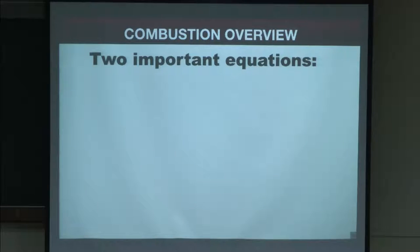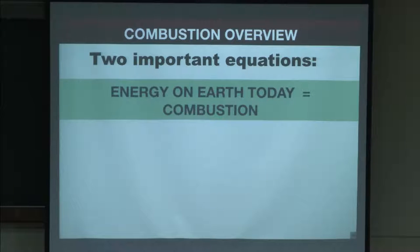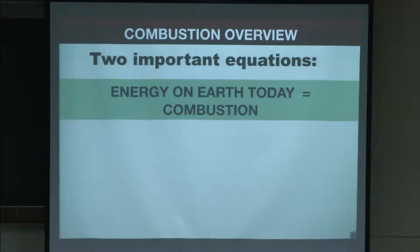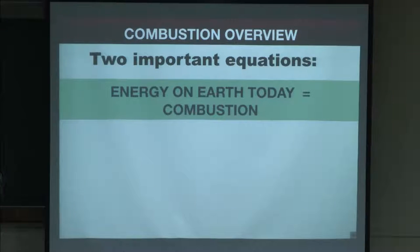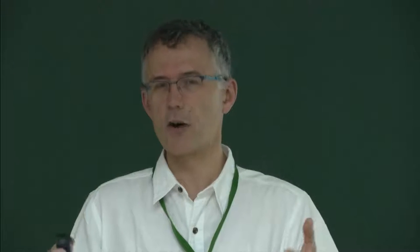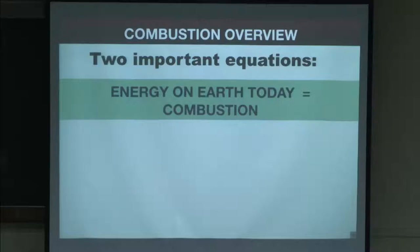That leads me to the first key equation: energy on Earth today is combustion — no one can escape that. The interesting thing, especially for us as scientists, is that this is not what the public believes. The public believes energy comes from the plug — you just pull it and there is energy. But this energy is obtained by combustion. And even when someone says 'I want an electric car,' the electricity running the car is produced with combustion. So at the end of the day, combustion is everywhere.